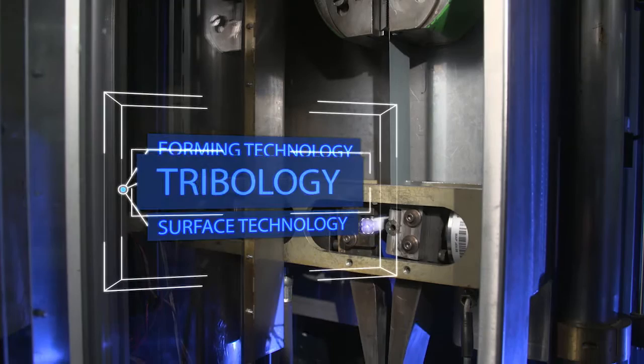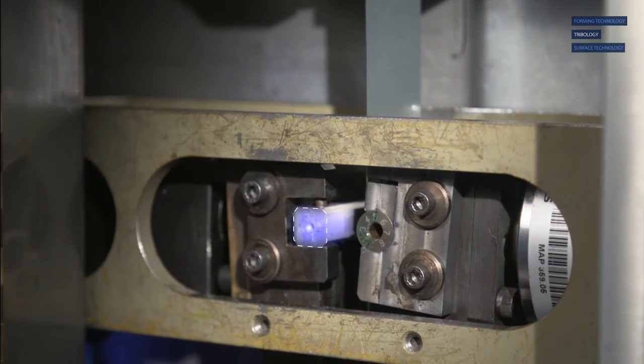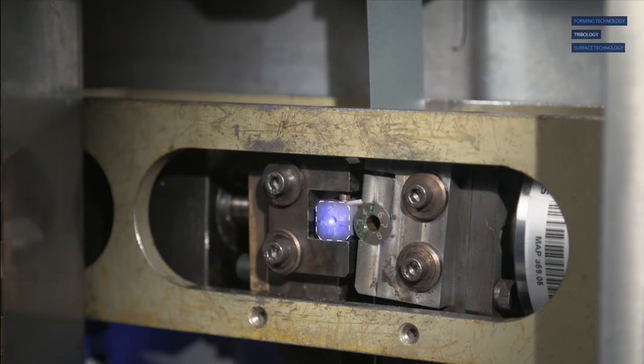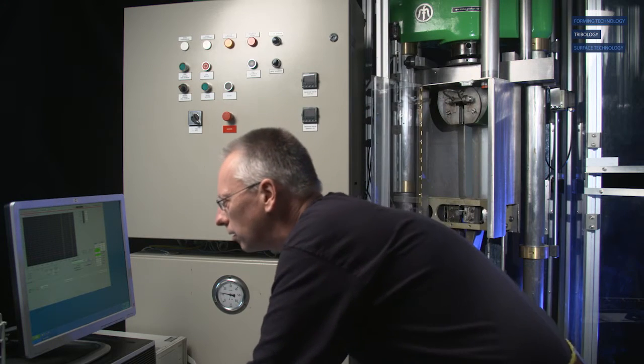Besides forming technology, Tata Steel has strong expertise in tribology. Tribological knowledge is key for controlling pressing behavior and reducing tool pollution in press shops.